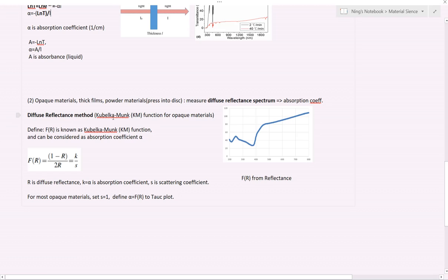We have the Kubelka-Munk function. From this function, we can roughly estimate the optical absorption coefficient. The equation, the function is here. f(R) is equal to (1 - R)² over 2R equals K over S. Notice that K here is optical absorption coefficient, which is what we need for the Tauc plot. And S is the scattering coefficient. Here is the f(R) from the reflectance method.